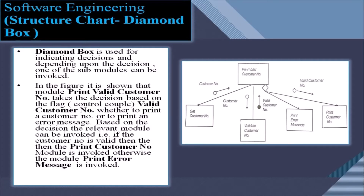A diamond box is used for indicating decisions. Depending upon the decision, one of the submodules can be invoked. For example, the module 'print valid customer number' takes a decision based on the flag — the control couple — whether the customer number is valid or not, and whether to print the customer number or print an error message. If the customer number is valid, then the 'print customer number' module is invoked; otherwise, the 'print error message' module is invoked.